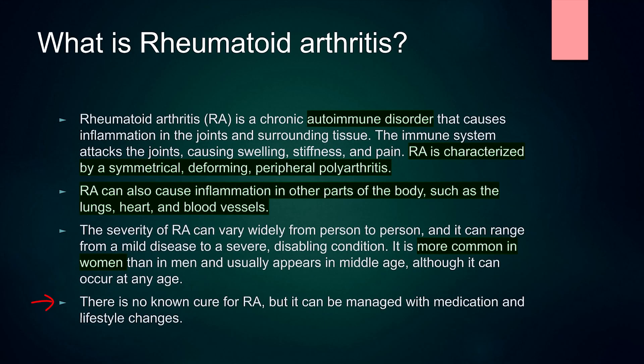There is no known cure for rheumatoid arthritis but it can be managed with medication and lifestyle changes. Most autoimmune diseases cannot be cured because the disease process is linked with our immune system — our immune system is attacking our body. For rheumatoid arthritis, it is attacking our joints. We cannot fully suppress our immune system because that would make us more susceptible to infection. That's why these diseases cannot be cured but can be controlled.